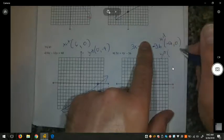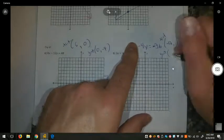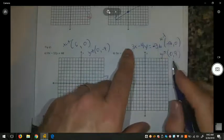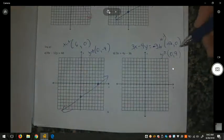For the y-intercept, negative 36 divided by negative 4 is positive 9. For the y-intercept, I plugged in 0 for x. So, here's our x and y-intercept.